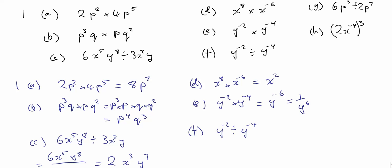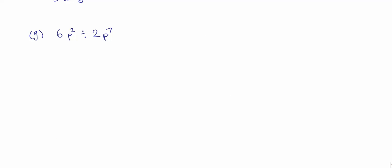Part F: y to the minus 2 divided by y to the minus 4 — we subtract — so that is y to the minus 2 minus minus 4. Minus minus 4 is plus 4, so that is minus 2 plus 4, which is 2. So that is, in fact, y squared. Part G: 6p squared divided by 2p to the 7 — 6 divided by 2 is 3 — then p squared divided by p to the 7, subtracting gives p to the minus 5, or we might write that as 3 divided by p to the power of 5.